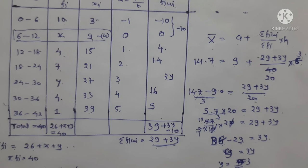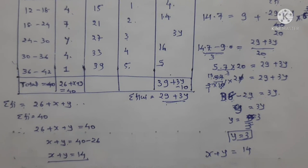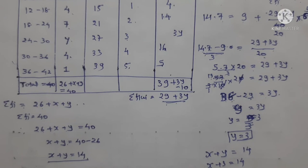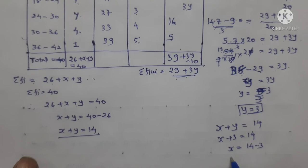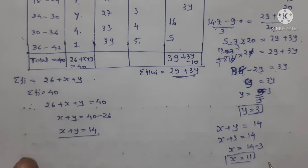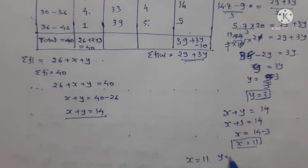We are given x plus y equals 14. Since y equals 3, x plus 3 equals 14, therefore x equals 11. So the missing values are x equals 11 and y equals 3. This is the answer.